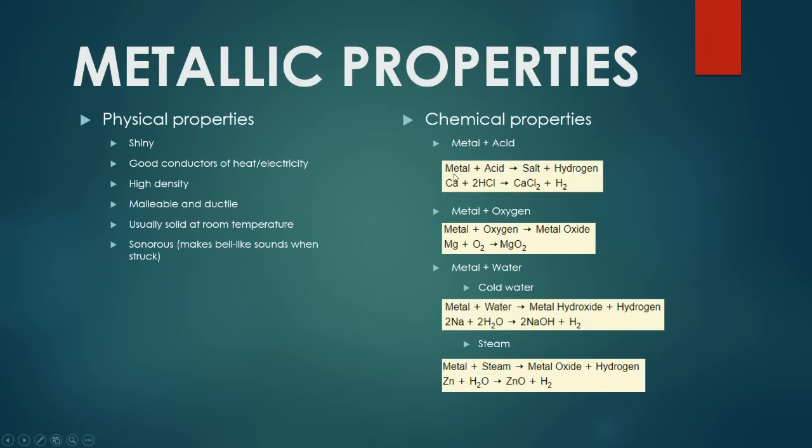In terms of the chemical properties, they have the classic metal plus acid reactions, and we've covered this in the acids and bases topic, but ultimately you get the salt and hydrogen when you add them together. Metals will react with oxygen to produce the metal oxide, and metals will also react with water. Now depending on the reactivity of the metals, they can either react with cold water, like sodium and potassium. They're fairly reactive metals, and you get the metal hydroxide salt along with the hydrogen.